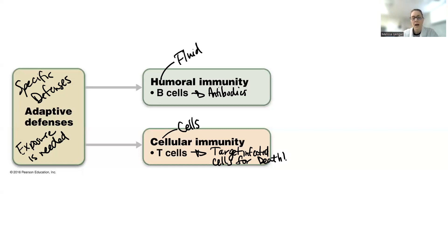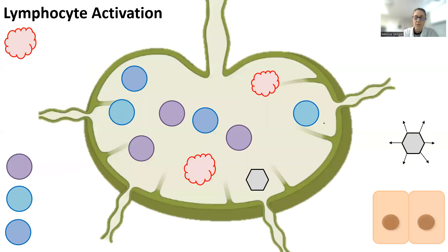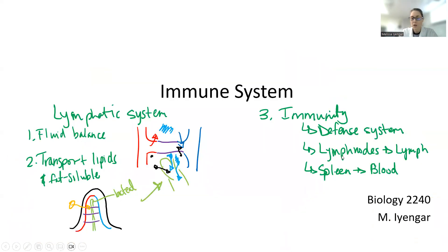You have to think about how these adaptive or acquired defenses work versus the innate defenses. Anything you've ever been exposed to, you have memory of that, and that's part of your adaptive defenses. There are also two different types of lymphatic organs. The third part of the lymphatic system's functions is essentially a defense system — we have primary organs and we have secondary organs.